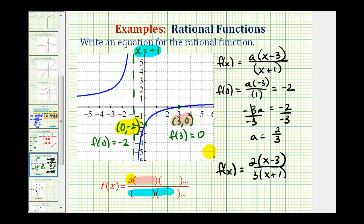This function here has all the characteristics given by the graph. Also notice that, to double check this, notice how the degree of the numerator and denominator are both one, which means the horizontal asymptote would be the ratio of the leading coefficients, which in this case would be y equals two-thirds. Looking at our graph, it does appear that our horizontal asymptote is y equals two-thirds. Okay, I hope this explanation was helpful.